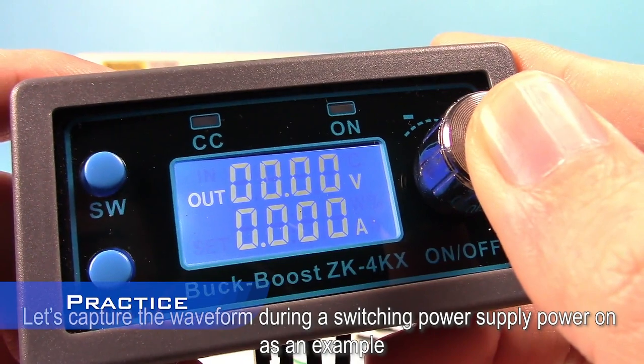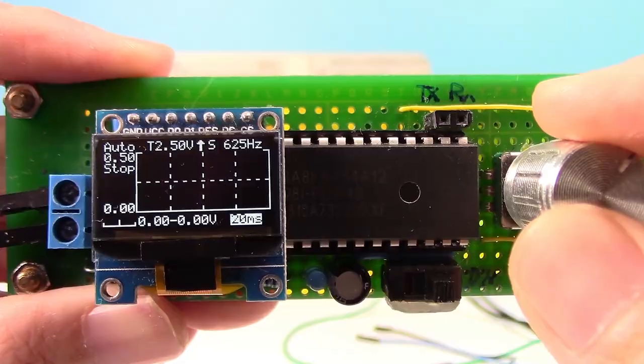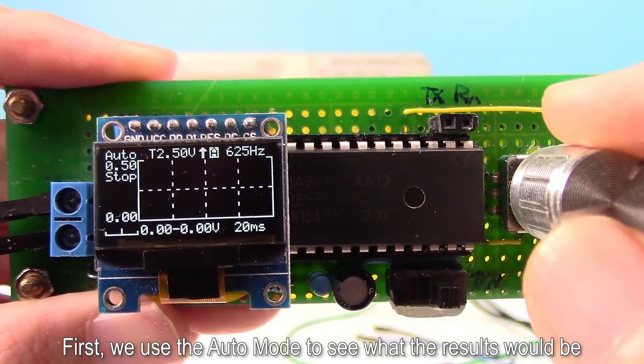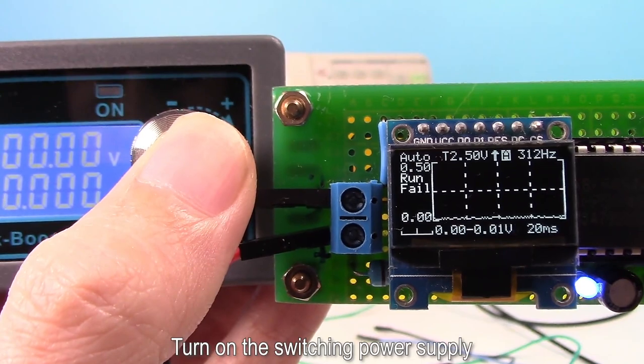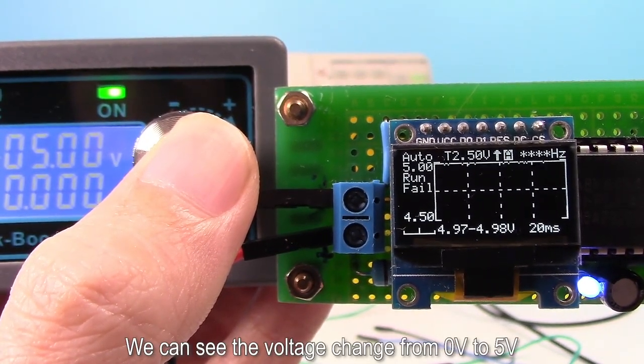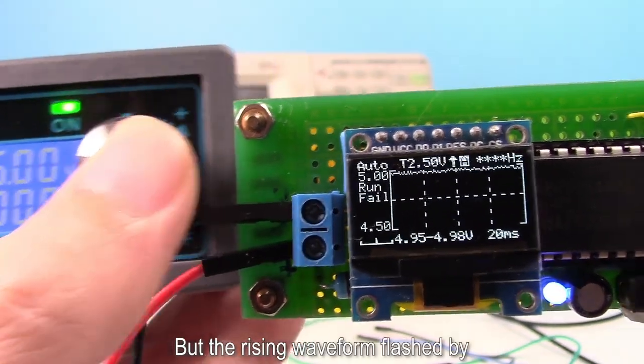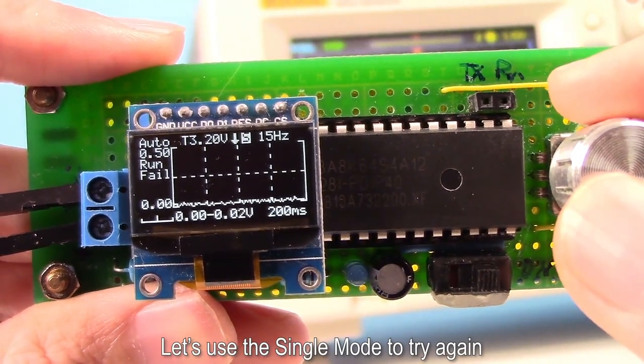Let's capture the waveform during a switching power supply power on as an example. First, we use the auto mode to see what the results would be. Turn on the switching power supply. We can see the voltage change from 0V to 5V, but the rising waveform flashed by. Let's use the single mode to try again.